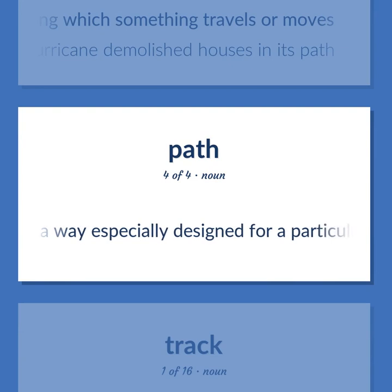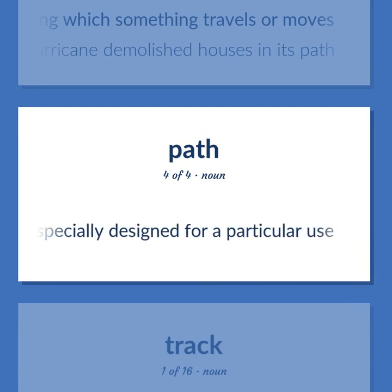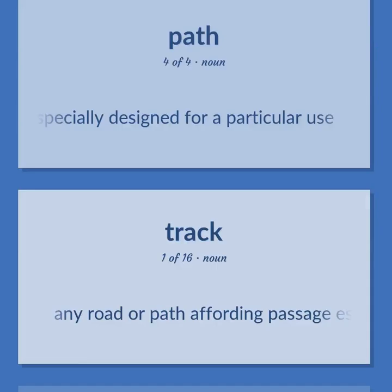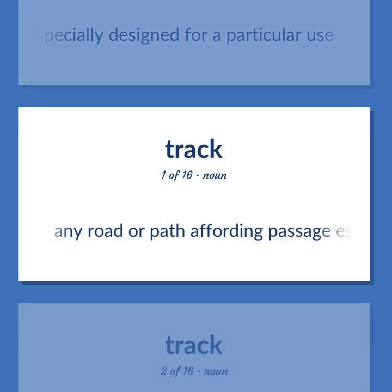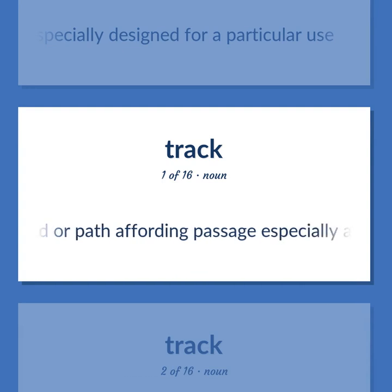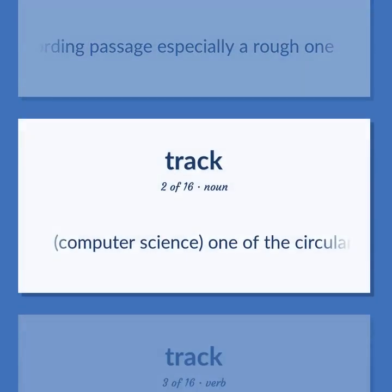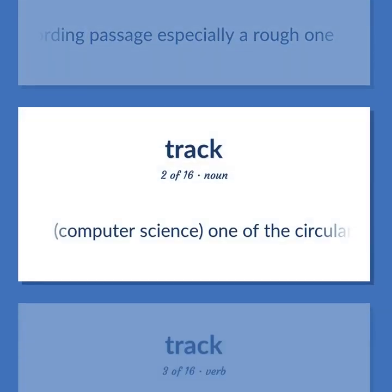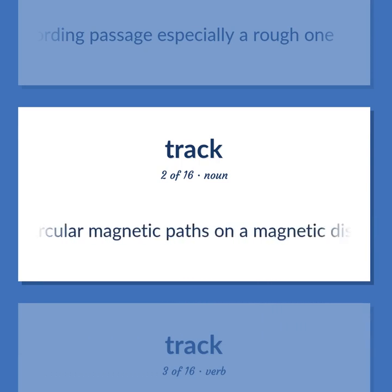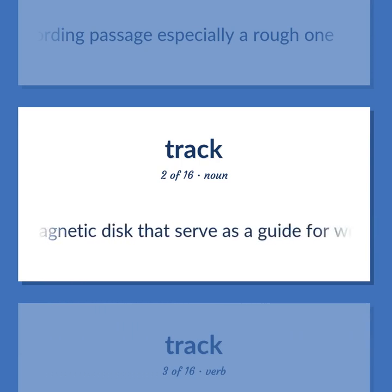A way especially designed for a particular use. Any road or path affording passage, especially a rough one. Computer science: one of the circular magnetic paths on a magnetic disk that serve as a guide for writing and reading data.